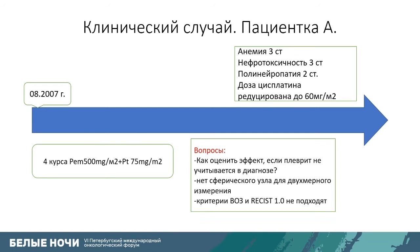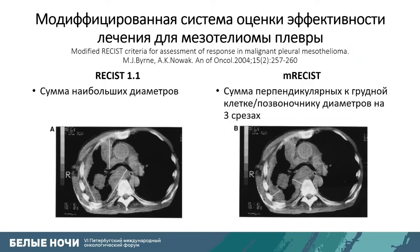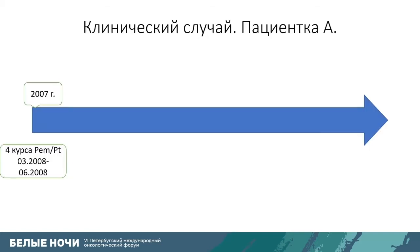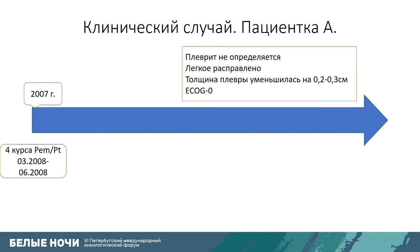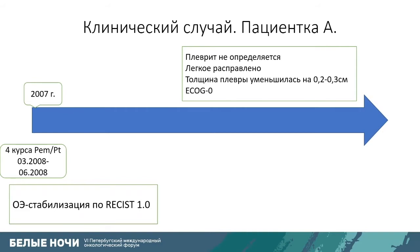A key question arose: how do we assess the effect when pleuritis is not a discrete nodule? There is no spherical node for 2D measurement — only diffuse thickening — so RECIST 1.0 and WHO criteria are not suitable. A modified system for assessing treatment efficiency in pleural mesothelioma uses diameters at three sections to provide one target control locus. Considering clinical improvement and pleural thickness reduction of 1.2–1.3 cm, we considered this stabilization per RECIST 1.0.